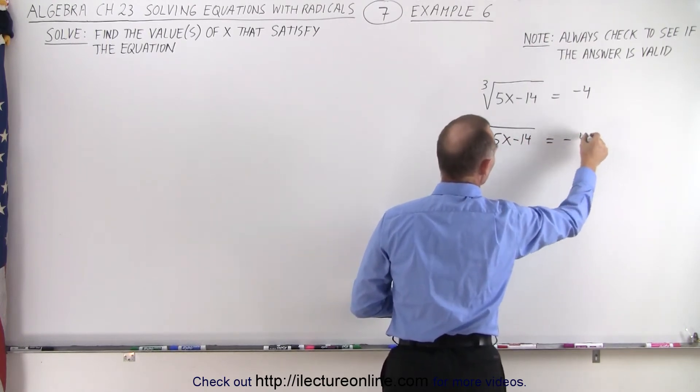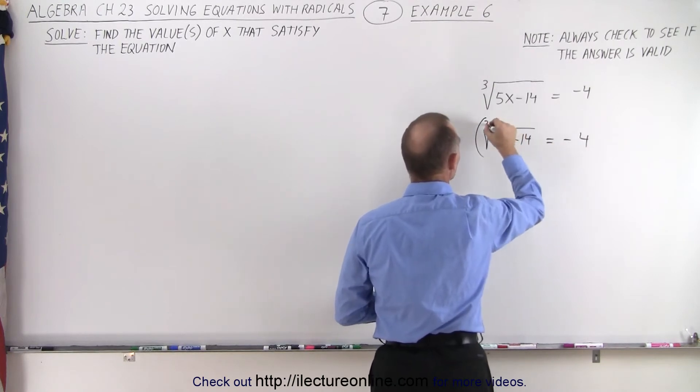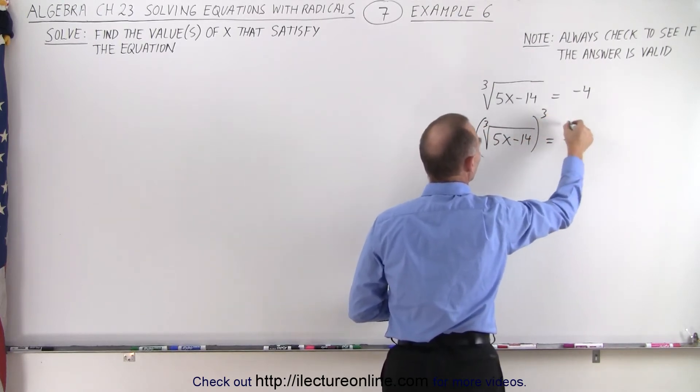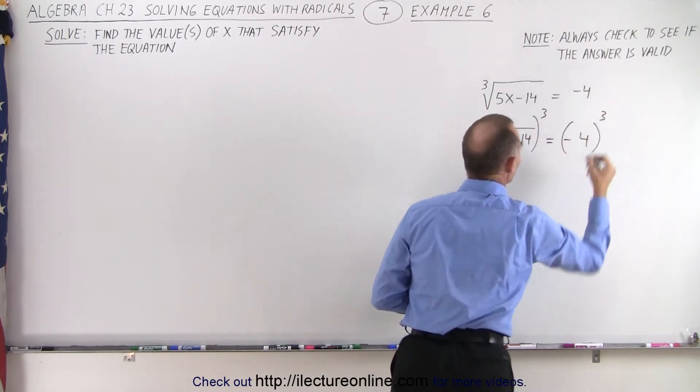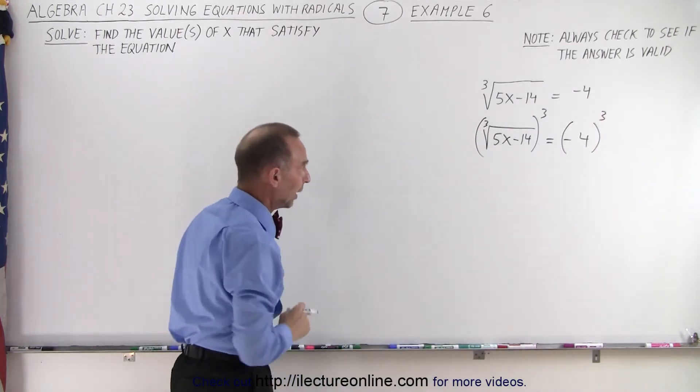because we want to use the original problem to check when we're done to make sure that what we found was indeed a valid solution. So since we have a cube root, we're going to cube both sides instead of square both sides. That way, we get rid of that radical.